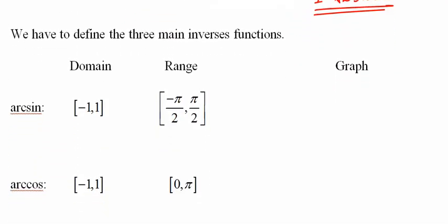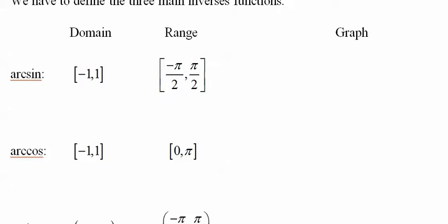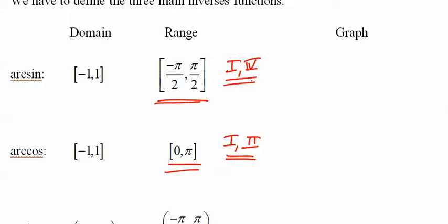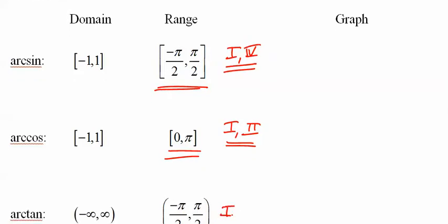Since we only want one answer, we define the domain and range. Sine can only be from negative pi over 2 to pi over 2. Cosine can only be from 0 to pi. So when you're looking for cosine you're looking in quadrants 1 and 2; when you're looking for sine or tangent, you're looking in quadrants 1 and 4. Domain goes from negative 1 to 1, and the range goes from negative pi over 2 to pi over 2.